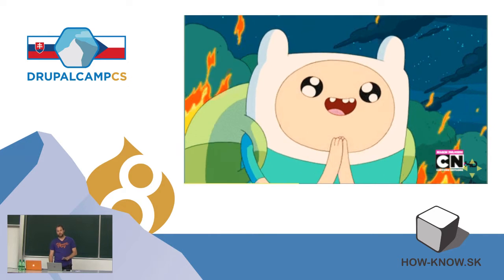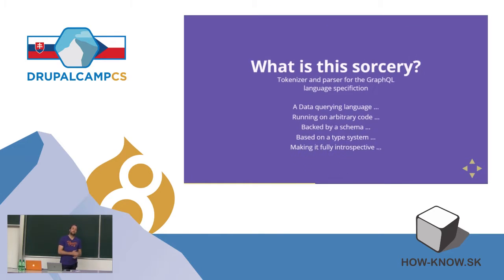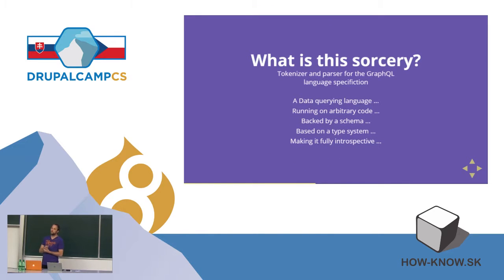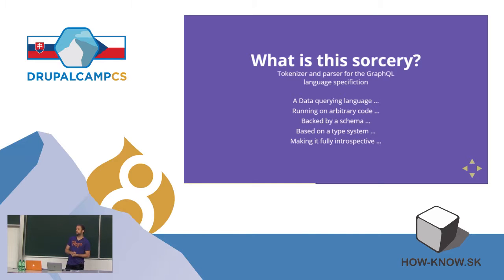So, especially for Drupal, GraphQL is very intriguing. GraphQL is a data querying language. It runs on arbitrary code, meaning it is completely agnostic of your storage layer — it simply executes functions on the server side that can use your existing APIs to fulfill the request. It is based on a type schema, so it is strictly typed, and you can provide your schema as a graph of type definitions. And it's fully introspective.